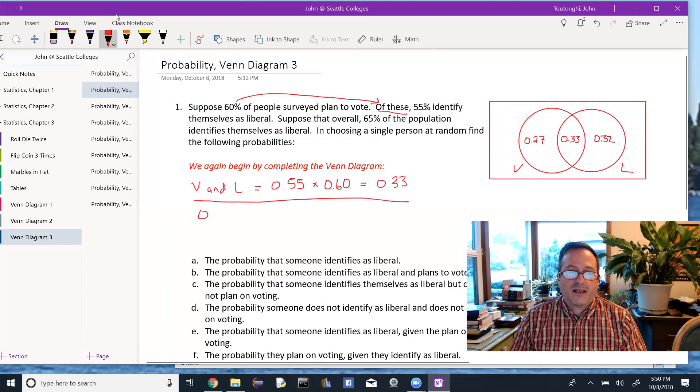So again, once I got the 33, I did some subtraction, 0.60 minus 0.33 to give me the 0.27. And the 0.65 of the population who's liberal, again, subtracting off the 0.33 that I found in the first part in the intersection, and that's giving me the 0.32.